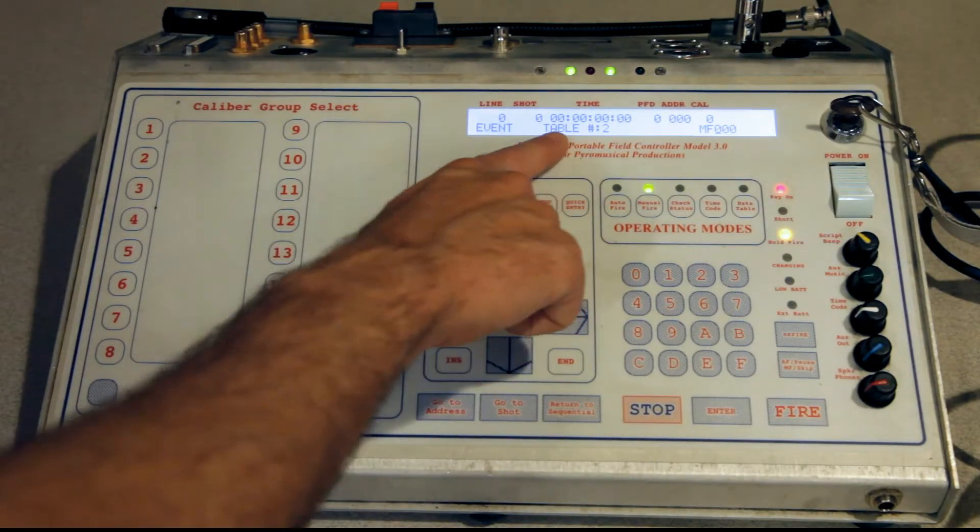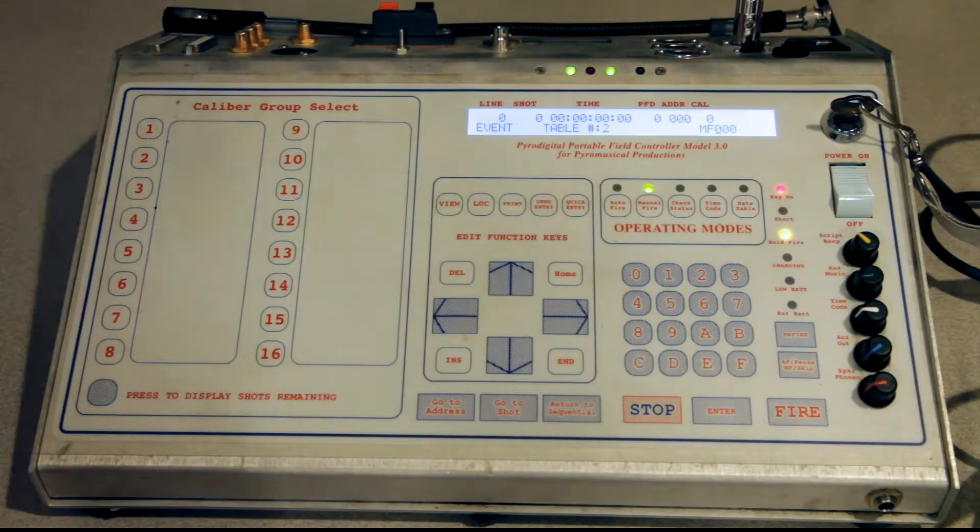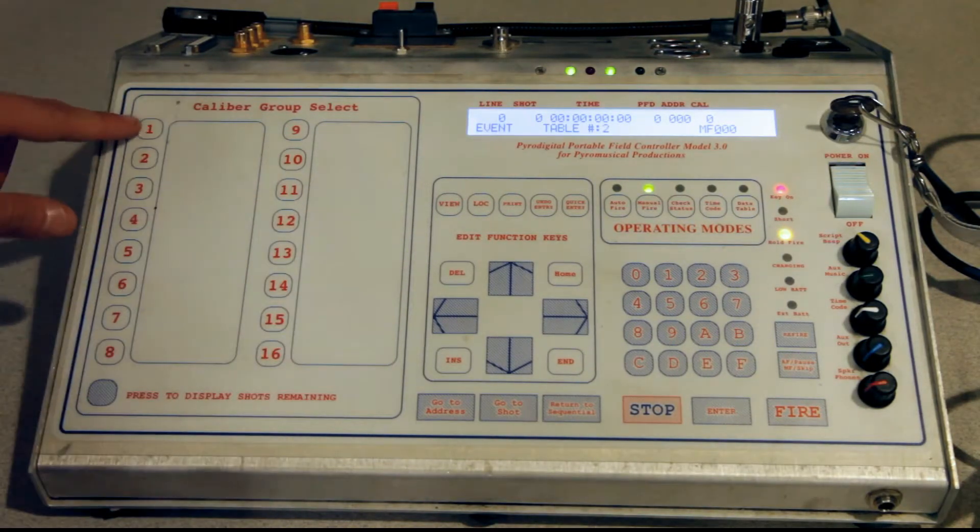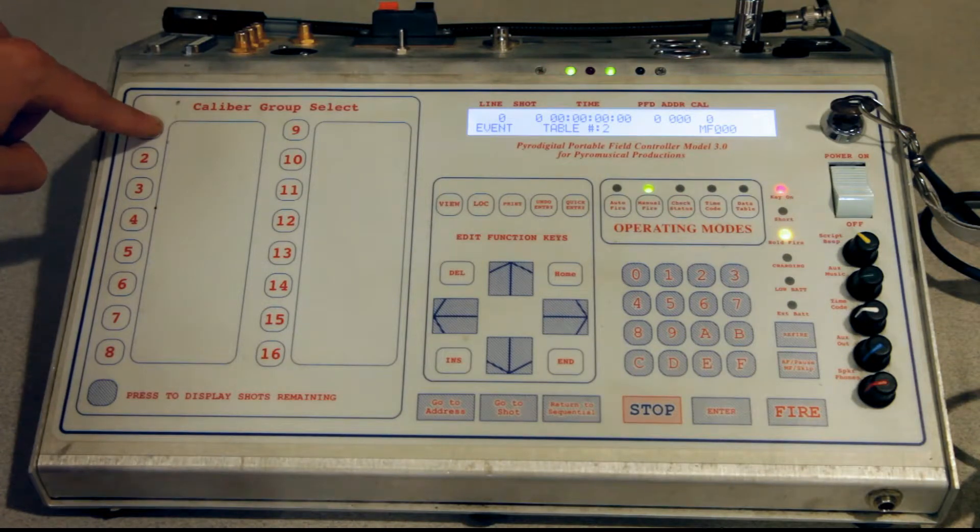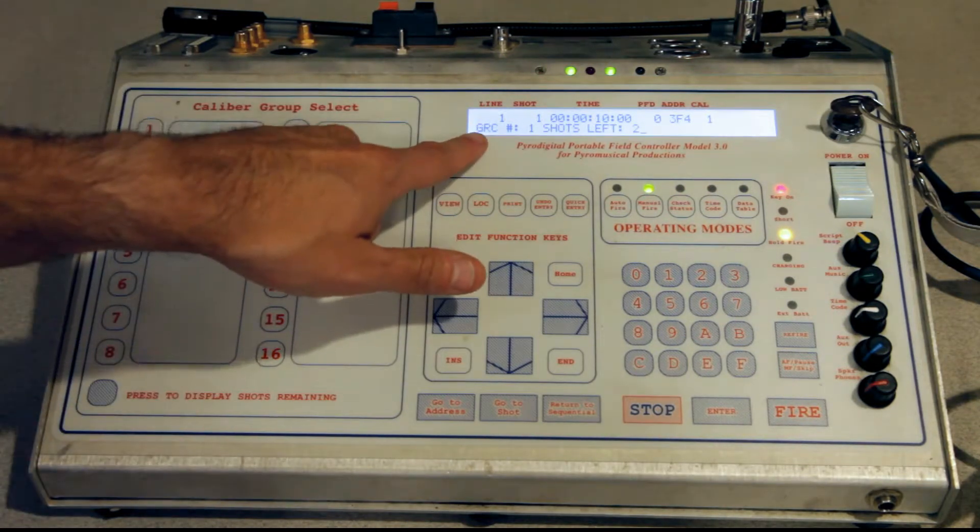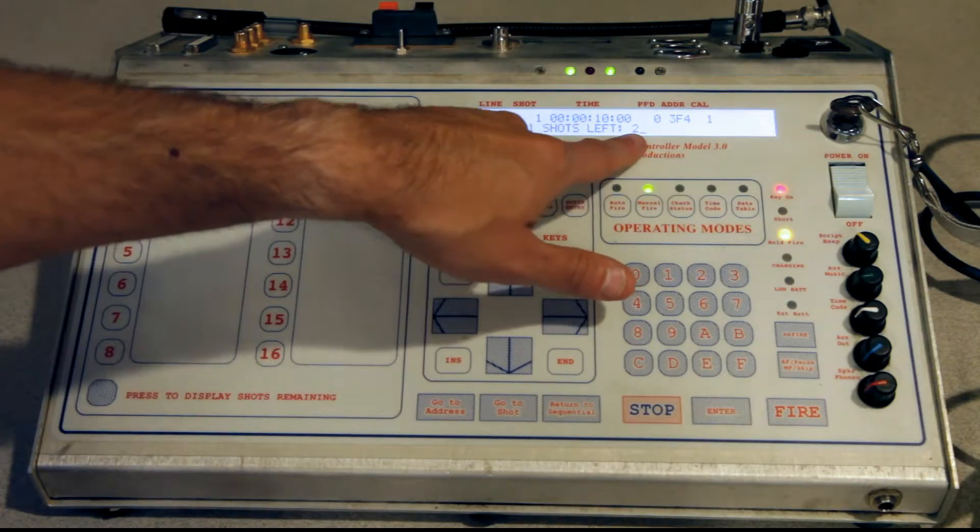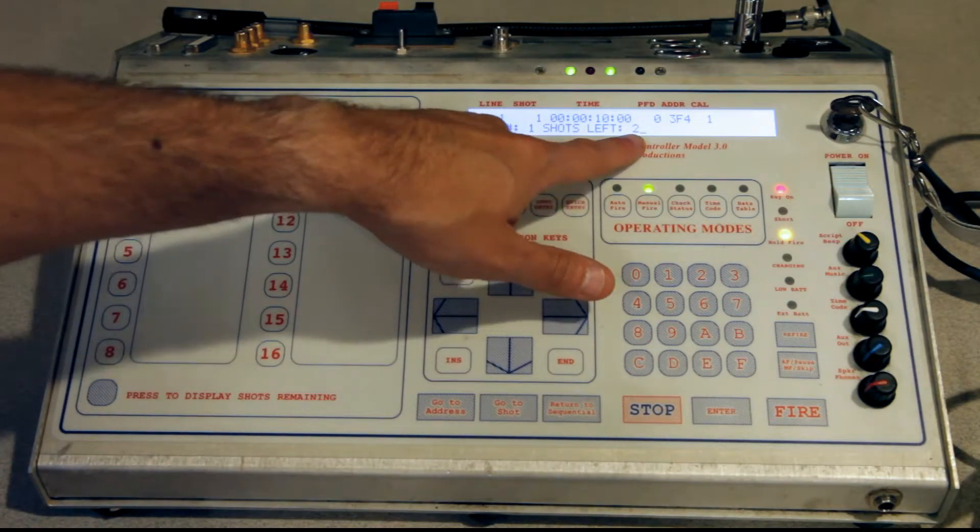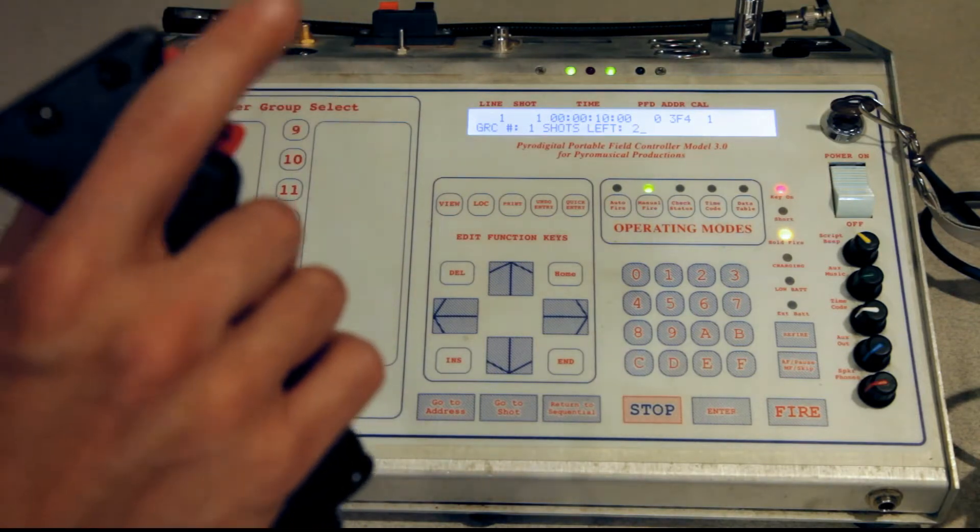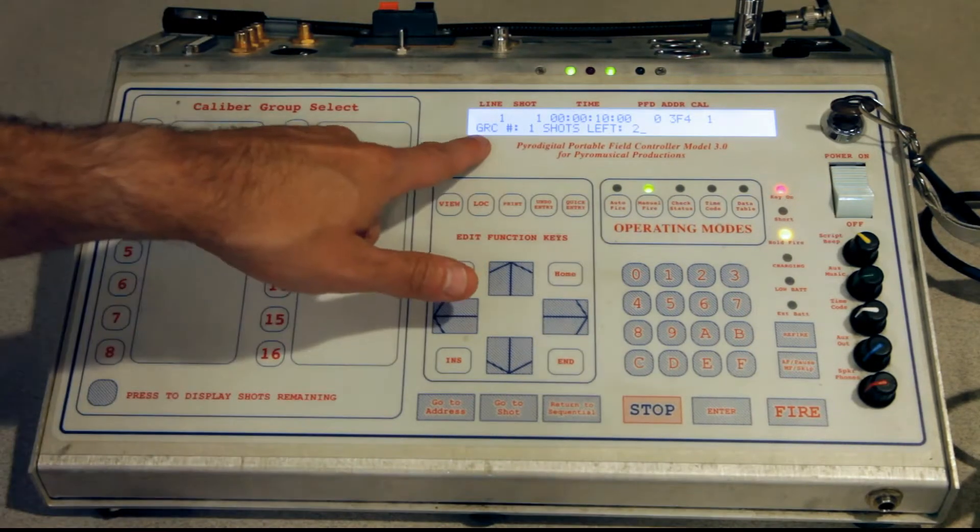Now you can see we're on table two. Since we programmed caliber numbers for each of our shots, we're going to go to caliber group one by pressing caliber group select button one. It's telling you you're in caliber group one and you have two shots remaining in this group. That means you have two different presses of the trigger in this caliber group.